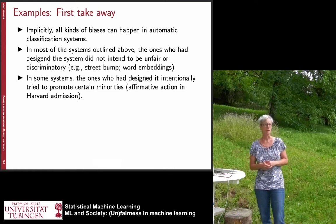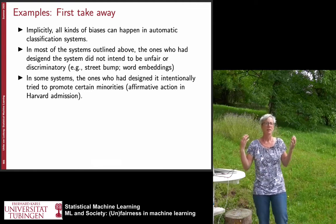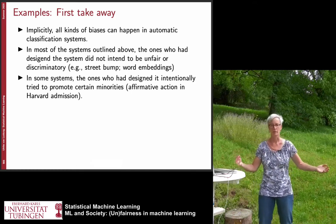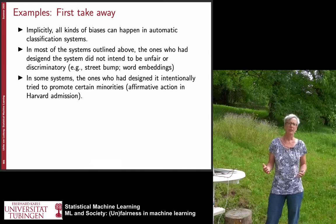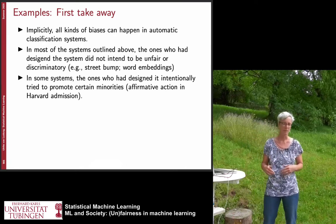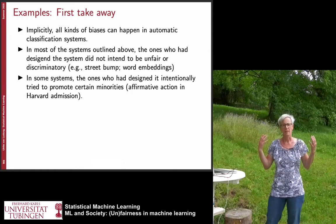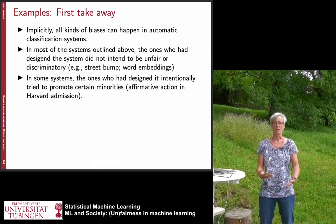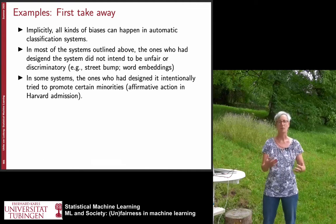This concludes the examples of unfairness. The first and most important takeaway: implicitly, all kinds of biases enter machine learning systems. Whenever you build an automatic classification system, there are millions of sources from which bias can enter your data. In most of these systems, the people who designed them did not intend to be unfair — the job agency in Austria, COMPAS designers, credit scoring — they presumably did not intentionally try to be unfair. If you naively apply machine learning without particular care, unfair systems will come out.